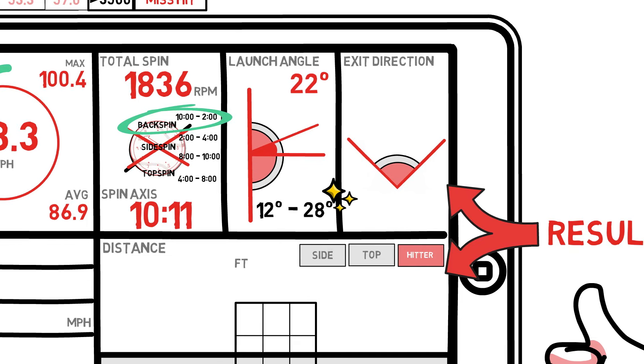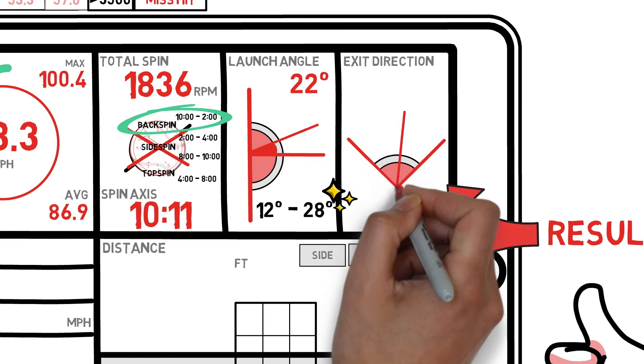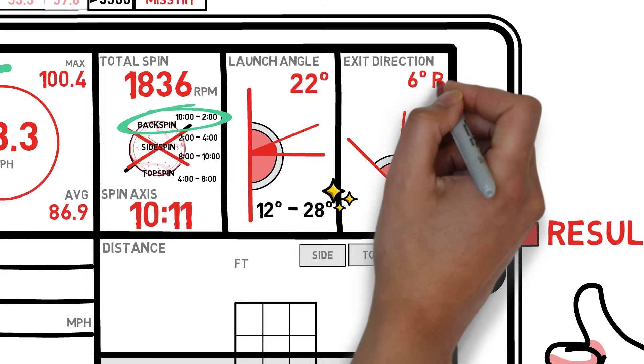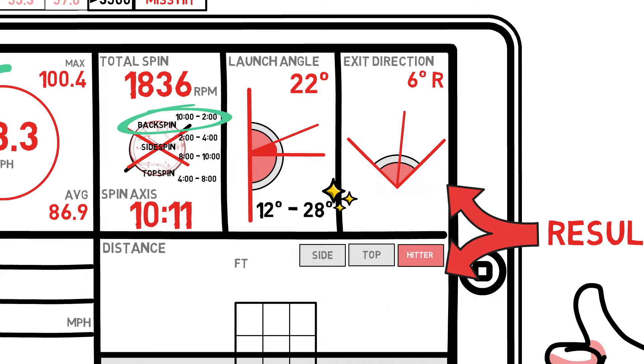On our last stop on this top row, we see our exit directions tab, which just gives us the degrees the ball is hit away from the midline of the field, indicated by a numerical value in degrees, and then an R for right and an L for left.